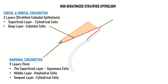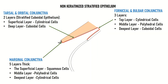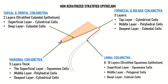The epithelium increases to three layers in the fornicial and bulbar conjunctiva: a top layer of cylindrical cells, a middle layer of polyhedral cells, and the deepest layer of cuboidal cells. The thickest epithelium is found at the limbus, consisting of as many as 10 layers of stratified squamous epithelium, with a superficial layer of squamous cells, middle layer of polygonal cells, and a basal layer of cubical cells. It is non-keratinized epithelium throughout — keratinization of conjunctival epithelium is always pathological.